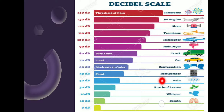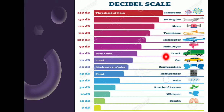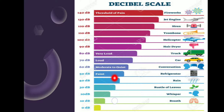A refrigerator produces a sound of 50 decibels. A truck is about 80 decibels — it is very loud. Above 70 is very loud, 60 is moderate, 50 is faint, and 70 is loud. At 140 decibels, that is the threshold of pain.